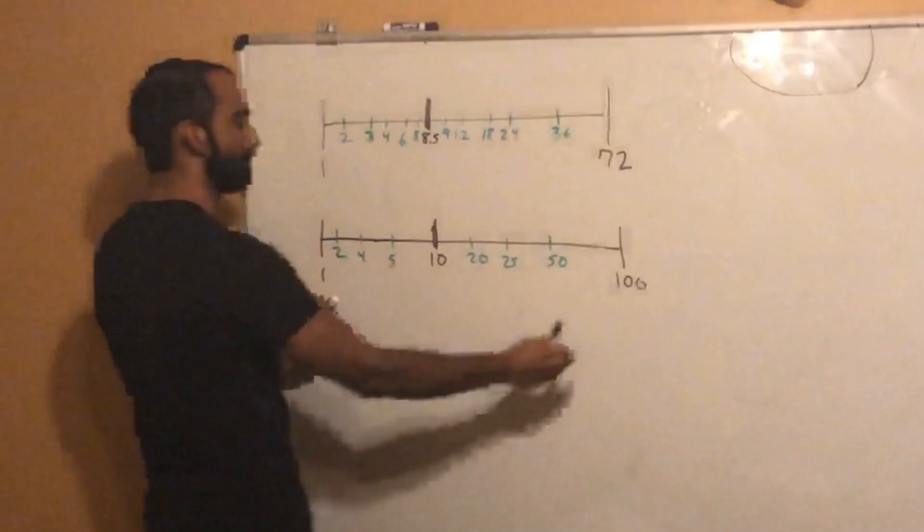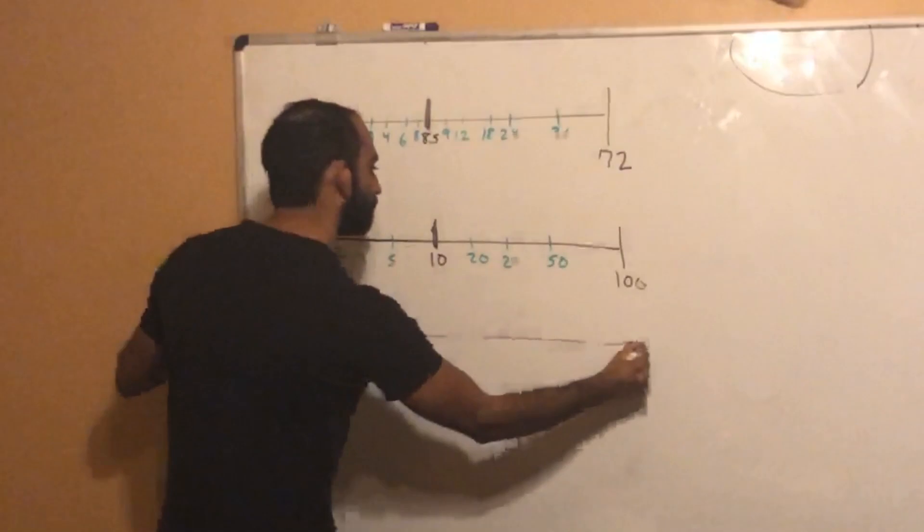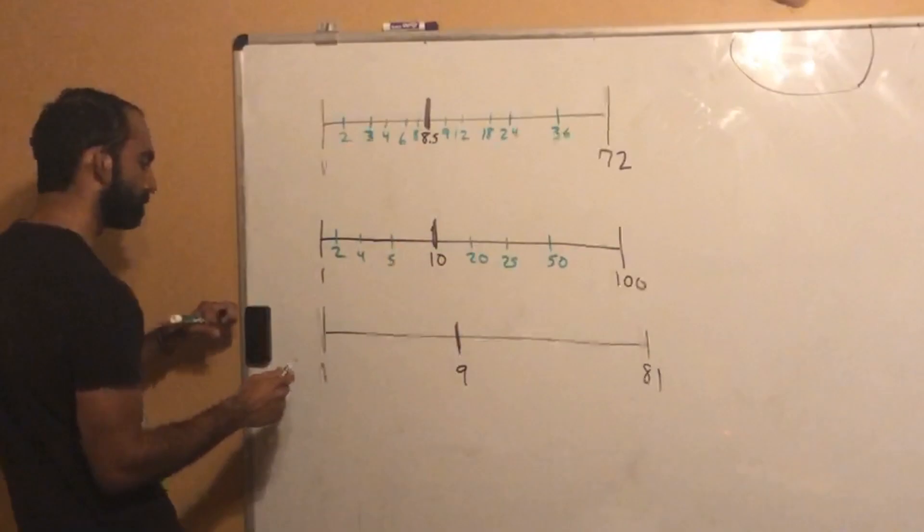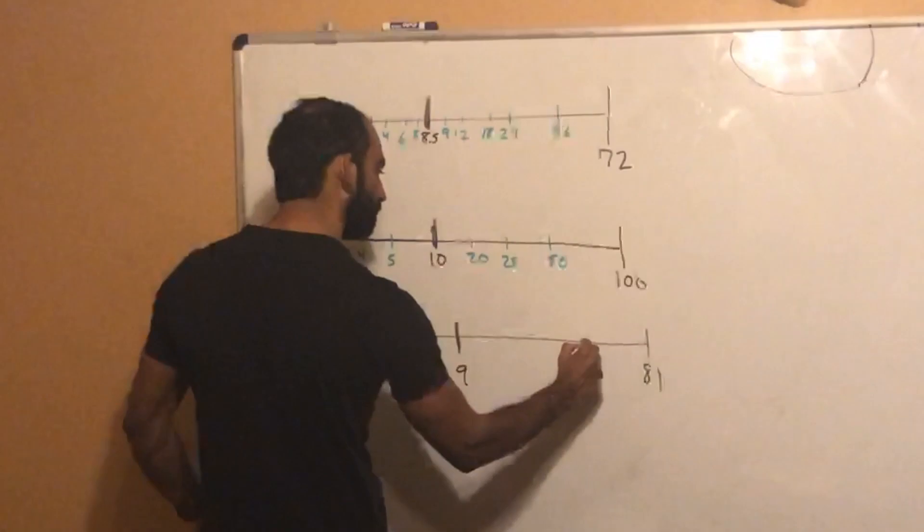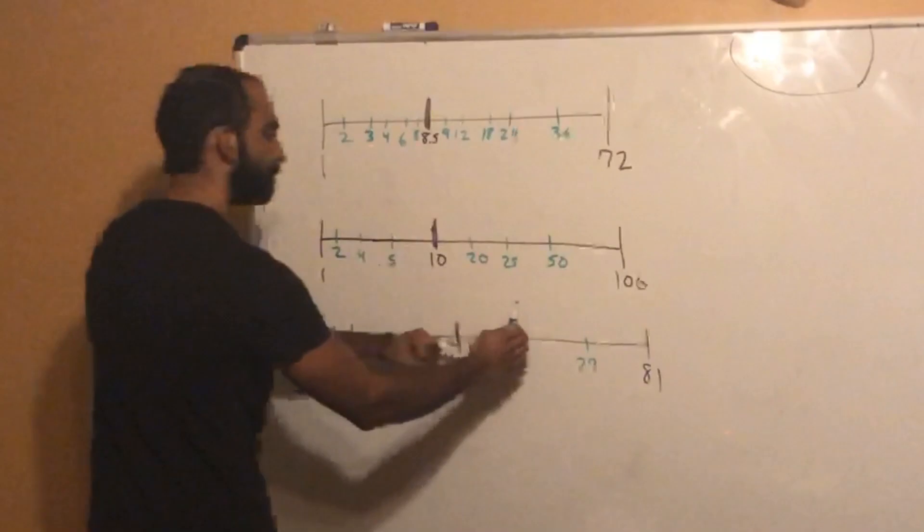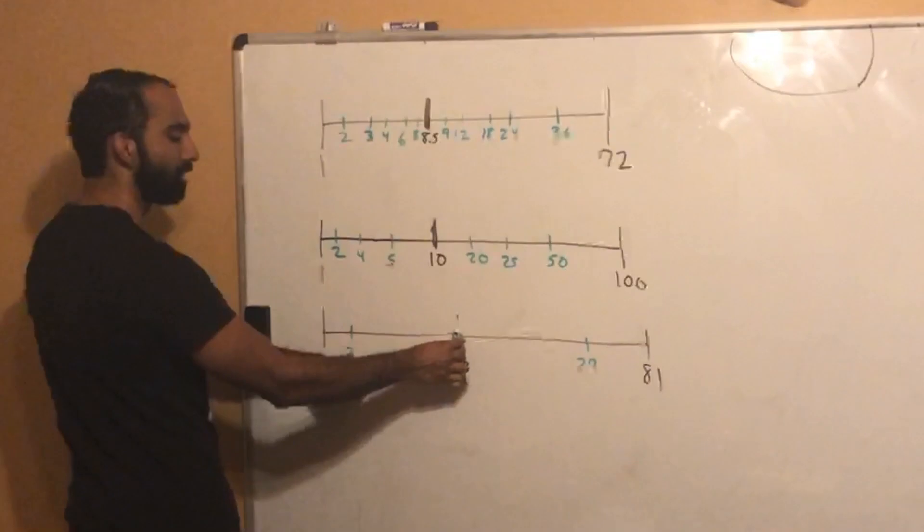Let's do an odd one, an odd perfect square. 81. Square root of 81 is 9. Now let's do the factor pairs. 3 and 27. That's it. We just have two factors that lie to the left, two factors that lie to the right, and excluding the endpoints, 1 and 81, one factor in the interior of each segment.